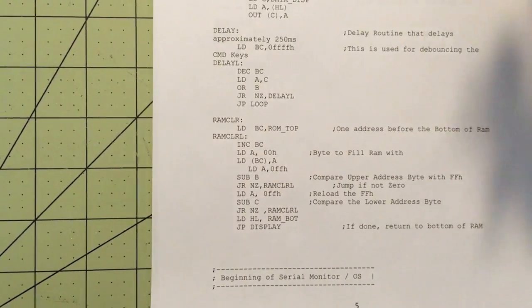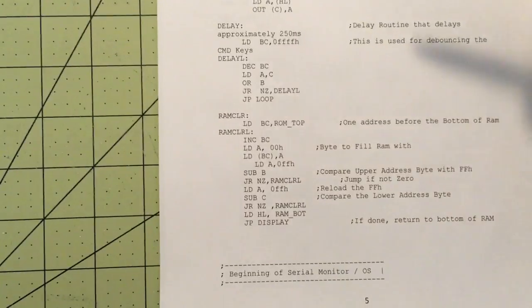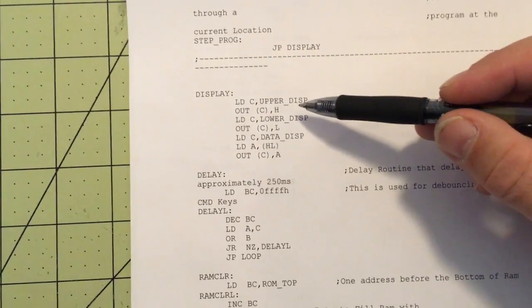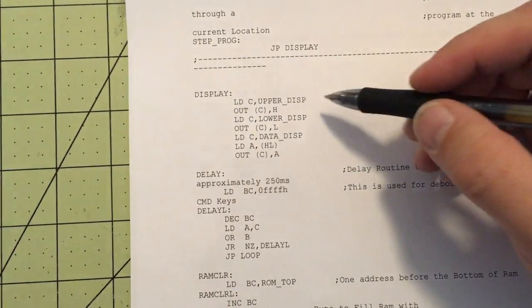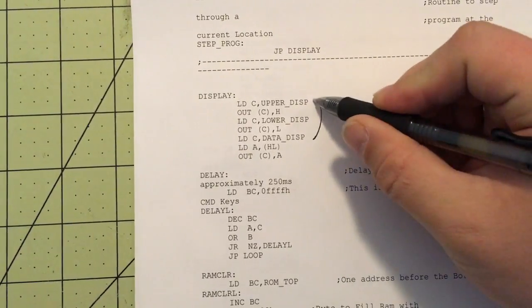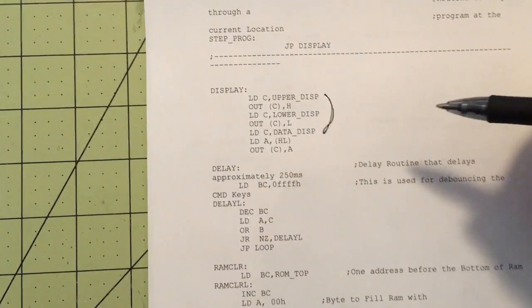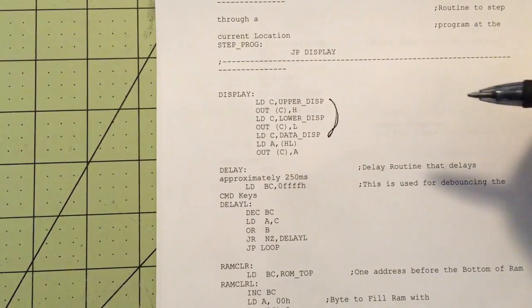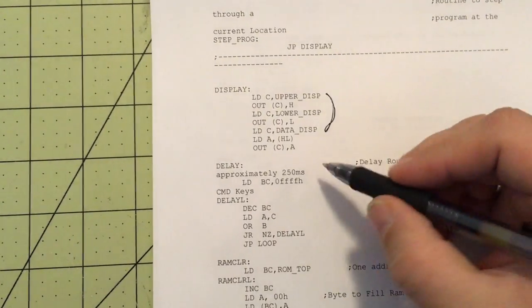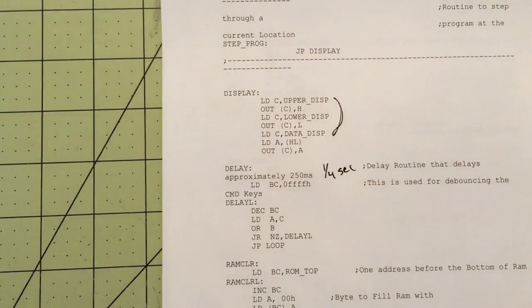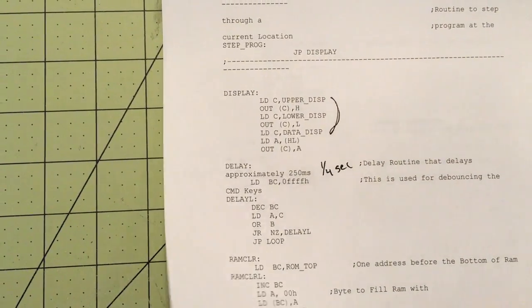Once RAMClear is done, it jumps back up to the display routine, which loads up the address and outputs it to the ports that the displays represent. There's also a delay routine that delays about one quarter of a second, or 250 milliseconds.